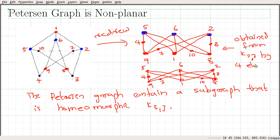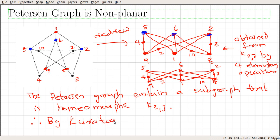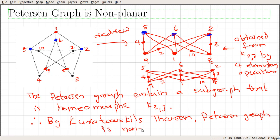By those four elementary operations, we have shown that this graph, which is a subgraph of our original graph, is homeomorphic to K3,3. Therefore, by Kuratowski's theorem, the Petersen graph is non-planar. So this is how we show certain graphs are not planar — if we are able to find a subgraph that is homeomorphic to either K5 or K3,3, then the original graph is not planar. The Petersen graph contains a subgraph that is homeomorphic to K3,3, and therefore the Petersen graph is non-planar.